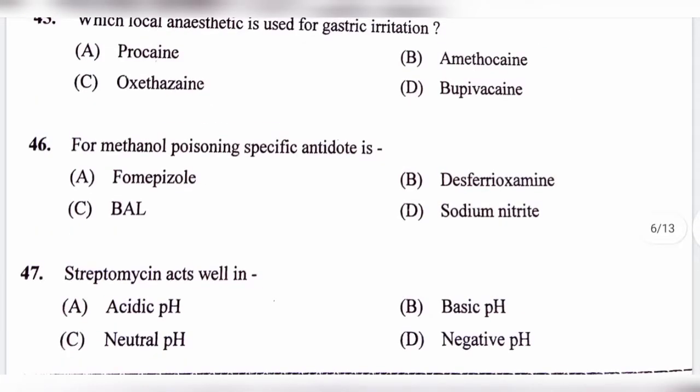Question number 46. For methanol poisoning, the specific antidote is: option A, Fomepizole; option B, Deferoxamine; option C, BAL; option D, Sodium nitrate. The correct answer is option A, Fomepizole.